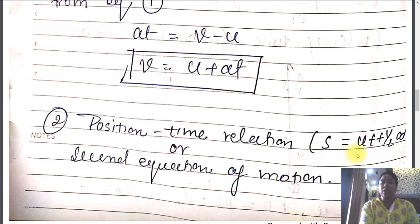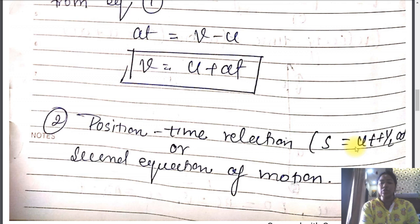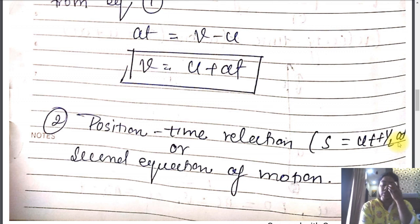In mathematical form, we express the second equation as S equals Ut plus half at squared, where S is the distance or displacement, U is the initial velocity, t is the time, and a is the acceleration of the object. We have to now derive this expression.